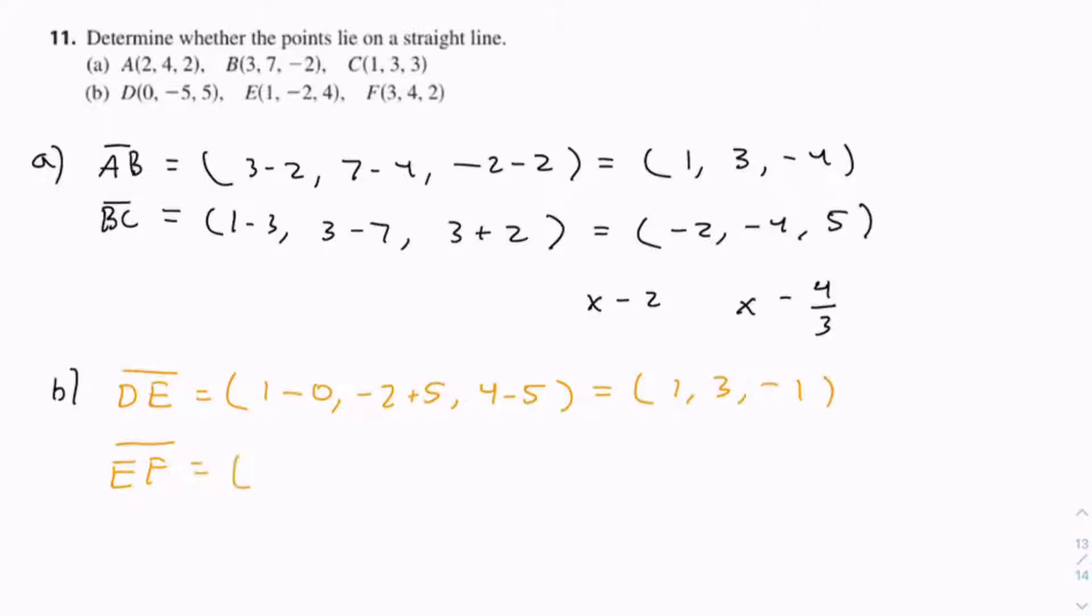Now if you go to EF, we have 3 minus 1, 4 minus minus 2, which is plus 2, and then 2 minus 4. Then we have 2, 6, negative 2.